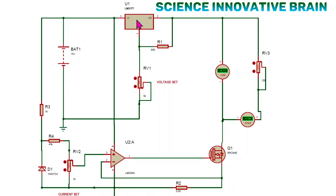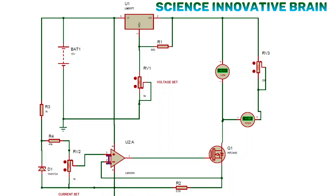The IC is powered with a 15-volt battery or DC power supply. The 15 volts is also given to a comparator. This comparator senses the output current flowing to the load and returning to the power supply. Whatever current flows through the sense resistor creates a voltage drop, and that voltage is compared with the set reference value. Based on this comparison, the comparator gives a command to the MOSFET, which increases or decreases its internal resistance to limit the output current.